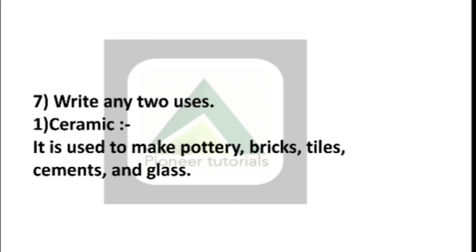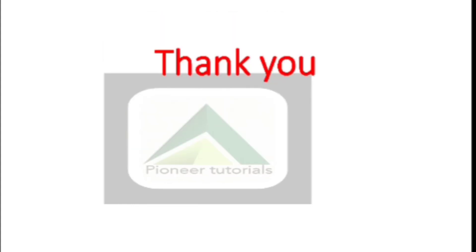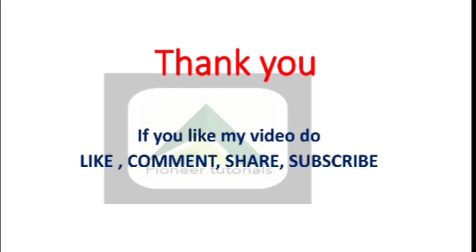Question number 7: Write any two uses. First — ceramic. Ceramic is used to make pottery, bricks, tiles, cements, and glass. Second — bone china. Bone china is most commonly used for the creation of tableware and teaware such as plates, bowls, mugs, and tea cups. Here we completed our worksheet number 10. Thank you. If you like this video, do like, comment, share, and subscribe, and share it with your friends, relatives, neighbors, or a person who needs it the most.